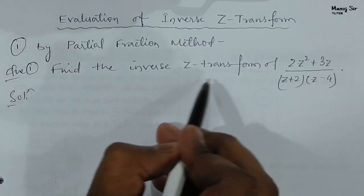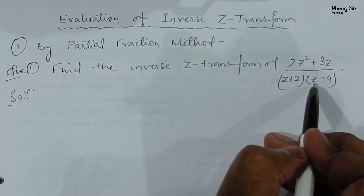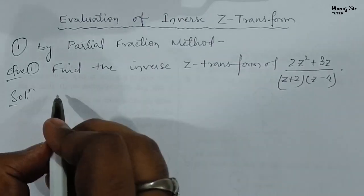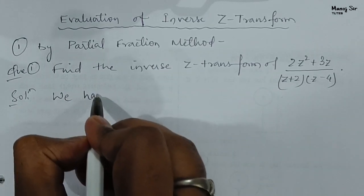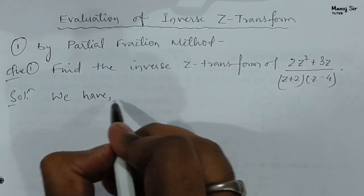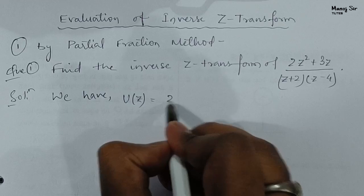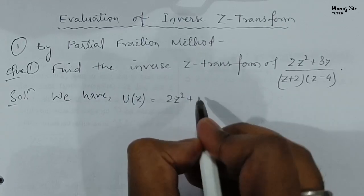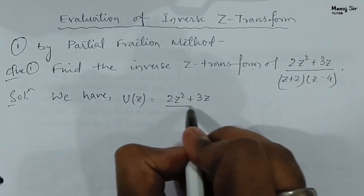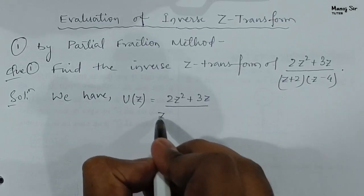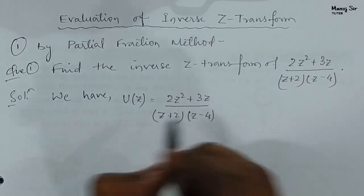The question says: find the inverse Z-transform of (2z² + 3z) / [(z + 2)(z − 4)]. So here we have U(z) equals 2z² + 3z upon (z + 2) into (z − 4).